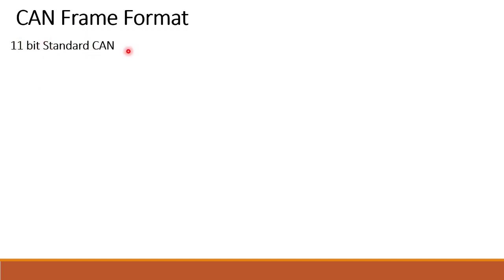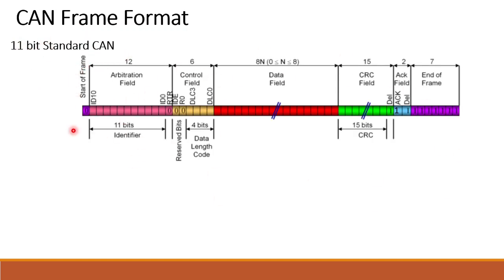We are going to represent both CAN frame formats in a graphical format. The first one is the 11-bit standard CAN frame format. In this standard CAN frame format, we have an 11-bit identifier. It is divided into multiple fields: start of frame, arbitration field, control field, data field, CRC field, acknowledgement field, and end of frame. Each field has a specific definition, which we will discuss one by one.